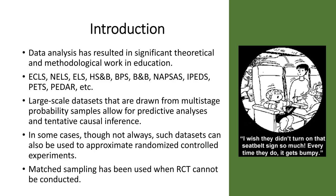IPEDS is unique from other data sources in that it tends to be more of a population or universe-type data. It isn't necessarily a probability sample like most of the other data sets mentioned, and it tends to include almost every single institution of higher education in the country, making it very useful for a lot of different types of analyses. These large-scale data sets are drawn typically from multi-stage probability samples, which allow us to conduct predictive analyses — the ability to make predictions about future occurrences based on current data. We can also make some tentative causal inferences, largely based on the fact that they are longitudinal data.